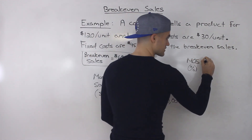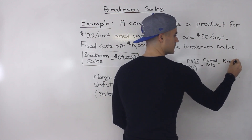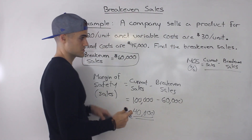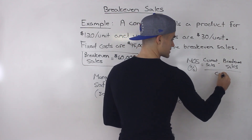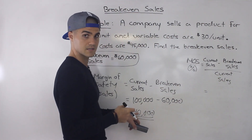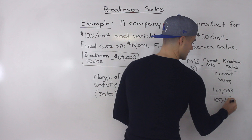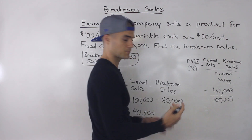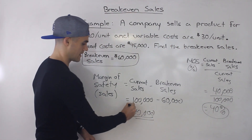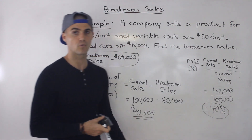You can also express margin of safety as a percentage: (current sales minus breakeven sales) divided by current sales. So that's ($100,000 minus $60,000) over $100,000 = $40,000 over $100,000 = 0.4, or 40%. Your sales can go down by 40% before you hit the breakeven point.